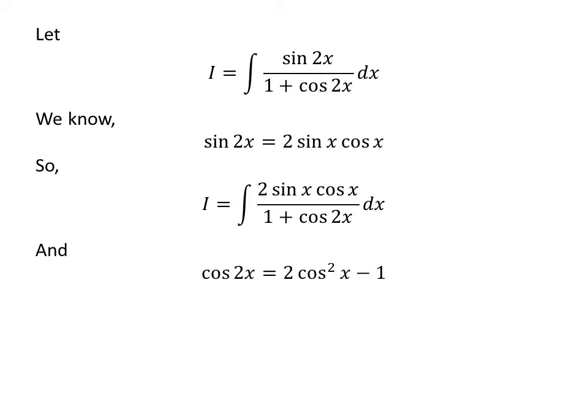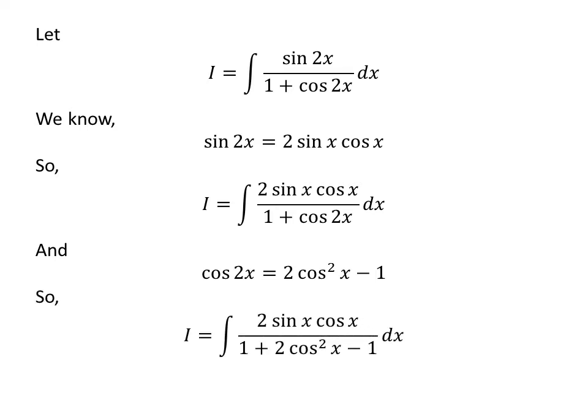We also know the famous identity for any angle x: cosine of 2 times x is equal to 2 times square of cosine of x minus 1. The video card in the upper right corner contains the proof of this identity, and the link is also given in the description. So, I replaced cosine of 2 times x in the above integrand with 2 times square of cosine of x minus 1.